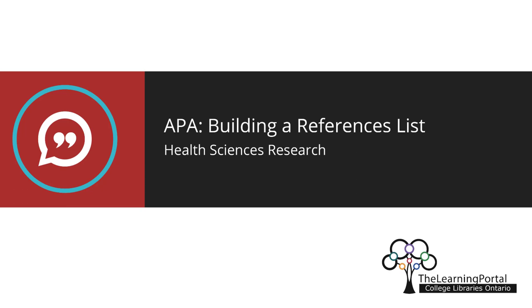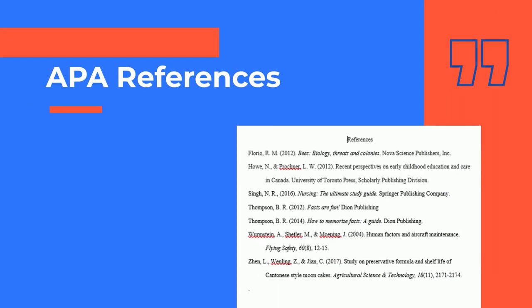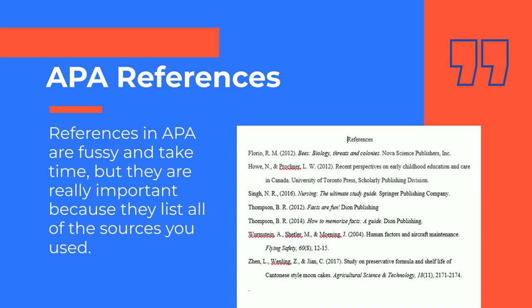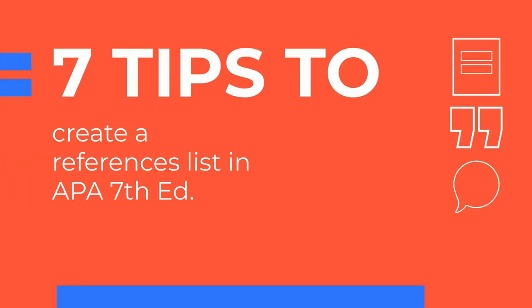APA – Building a References List. You've done your research and you have lots of high-quality articles, books, and websites to put on your reference list. We all know that references in APA are fussy and take time, but they are really important because they list all of the sources you use when writing your paper. Here are 7 tips to help you do a great references list.